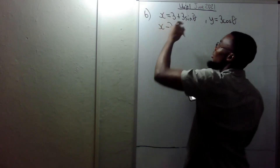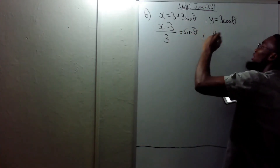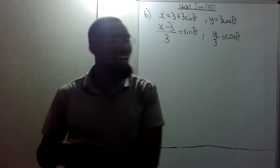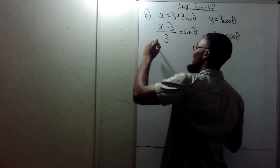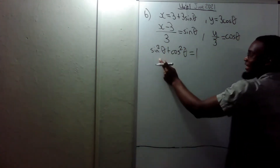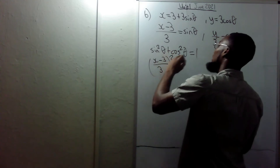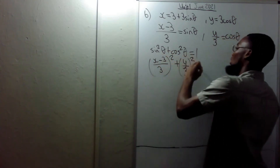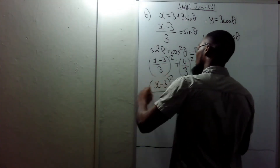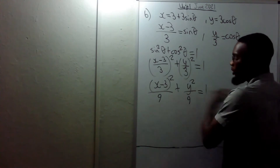From the parametric equations: (x minus 3) over 3 equals sin θ, and y over 3 equals cos θ. Now, sin²θ plus cos²θ equals 1, so substituting: ((x minus 3) over 3) squared plus (y over 3) squared equals 1. Expanding, we get (x minus 3) squared over 9 plus y squared over 9 equals 1. Multiplying through by 9: